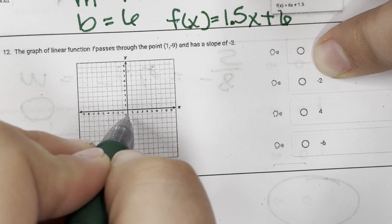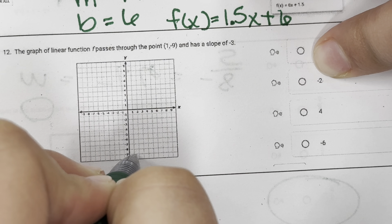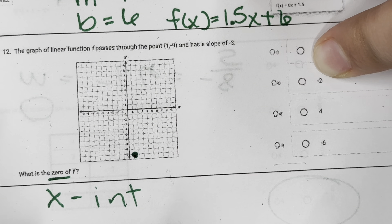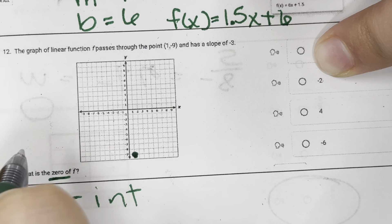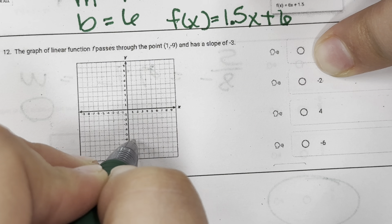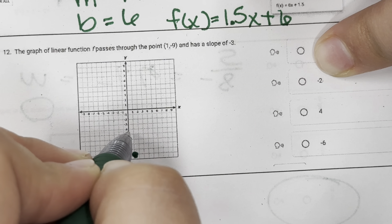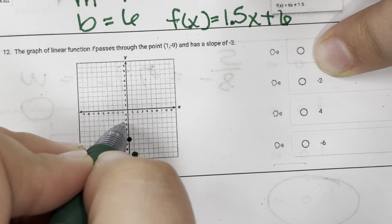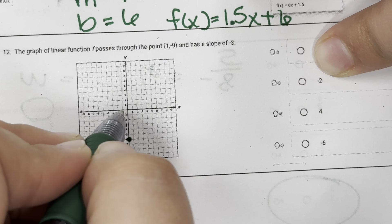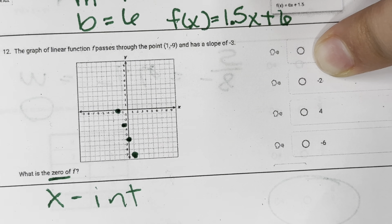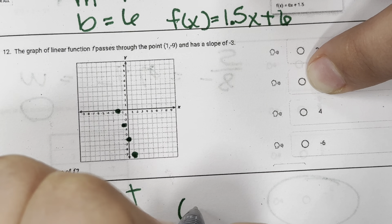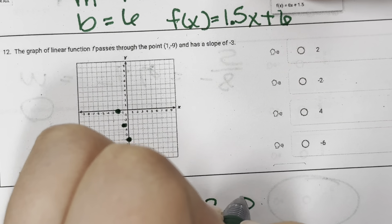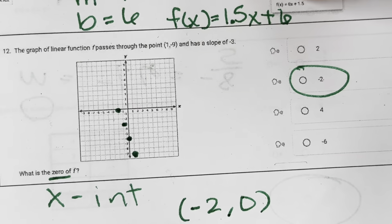Starting at (1, negative 9) with a slope of negative 3, I go up 3 and left 1 repeatedly. Going up 3, over 1 three times brings me to negative 2, 0. So my zero — my X-intercept — is negative 2.